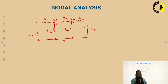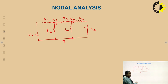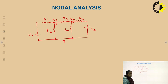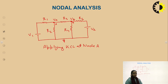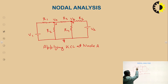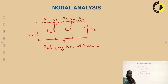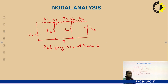Now, how to write the node equation? In nodal analysis, we apply KCL — the incoming current at a junction equals the outgoing current, or the algebraic sum of all currents at a junction is zero. When applying KCL at node A, we assume that node A is at higher potential, which means all currents are outward, since current flows from higher to lower potential.